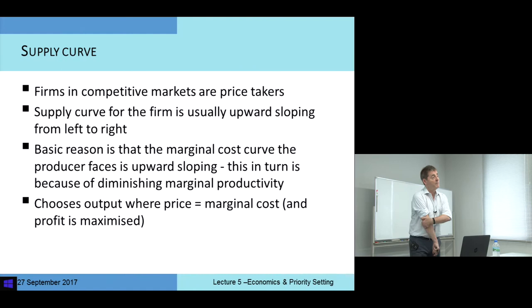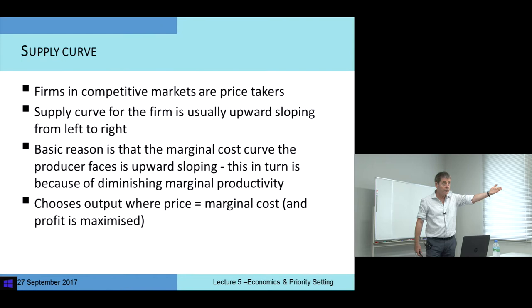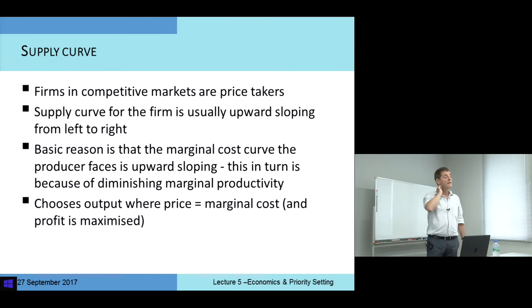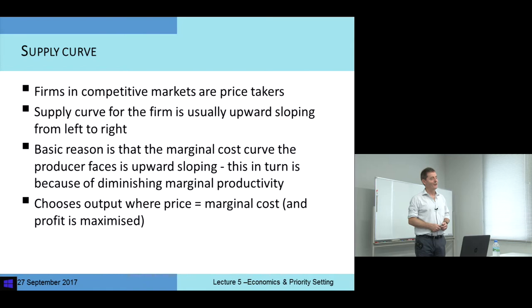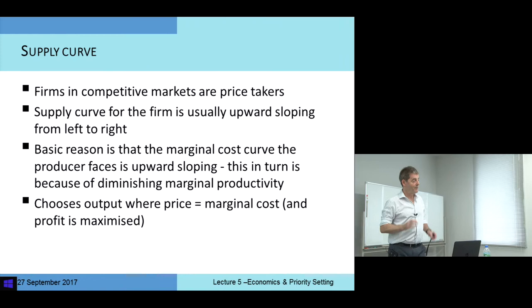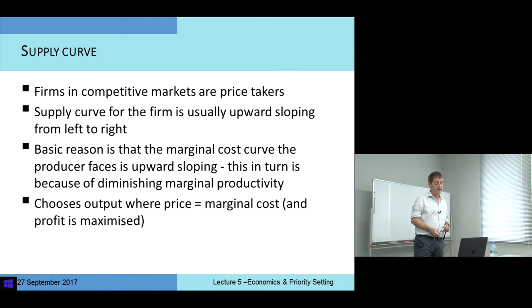The supply curve — for firms in a competitive market, they're price-taking. What they have to decide is, given the price they can obtain for their good or service, what quantity do they want to provide? That gives us a supply curve for the firm. As the price rises, we expect firms to want to supply more — it comes back to profit maximisation — so we get an upward sloping supply curve from left to right. A firm that is profit maximising and is a price taker chooses the quantity where price is equal to marginal cost because that maximises profit.